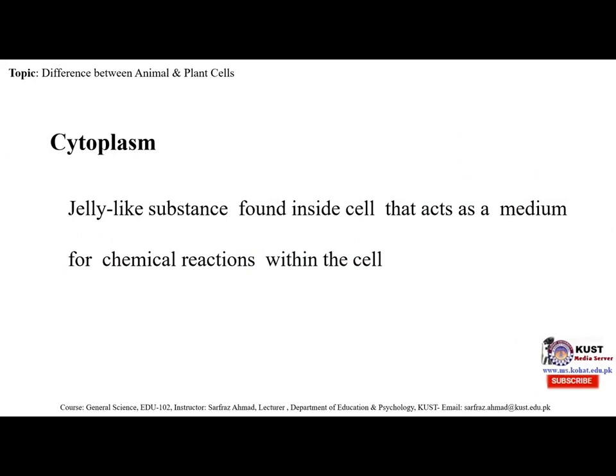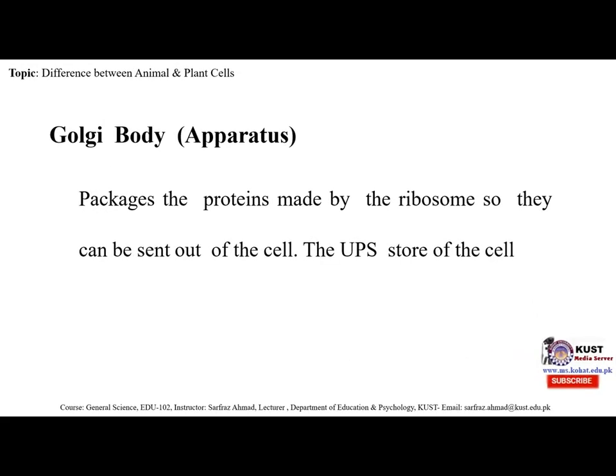Cytoplasm is a jelly-like substance found inside the cell that acts as a medium for chemical reactions. The Golgi body, also called the Golgi apparatus, packages proteins made by the ribosomes so they can be sent out of the cell. They are found in all eukaryotic cells and are involved in distributing synthesized macromolecules to various parts of the cell.